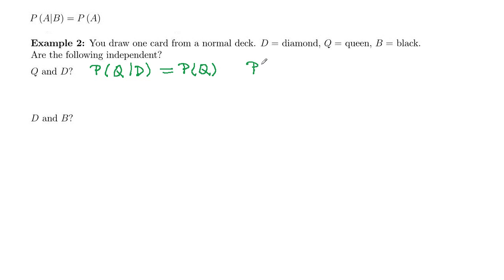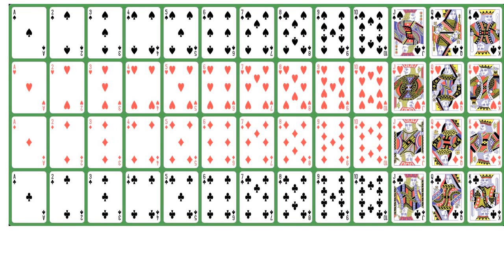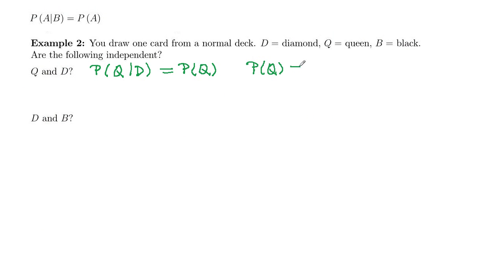Well, probability of drawing a queen, if we go to our deck of cards, there are four queens right here out of 52 cards. So queen is four out of 52.